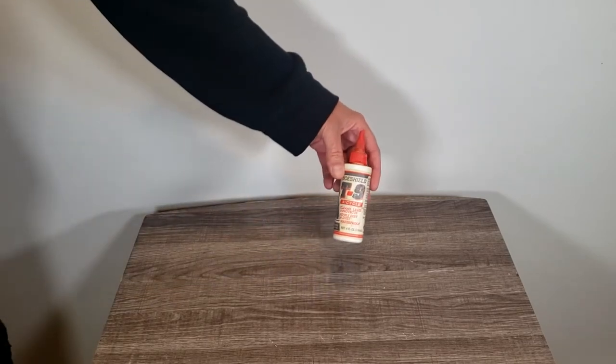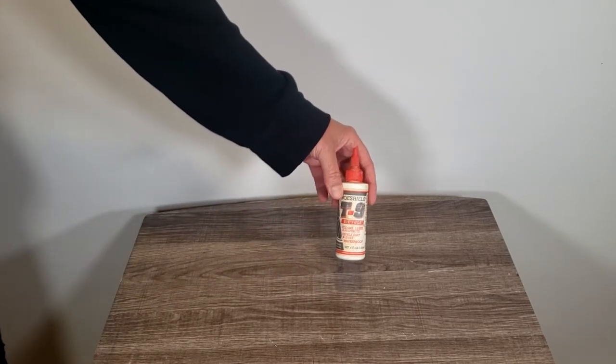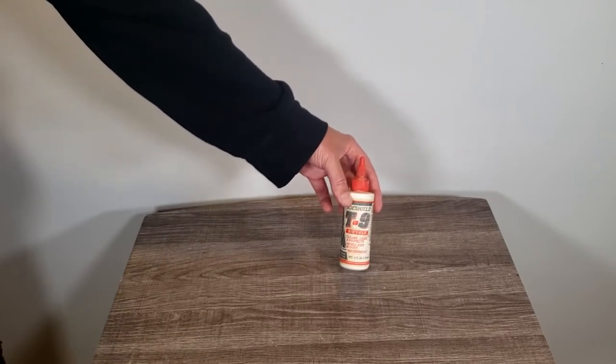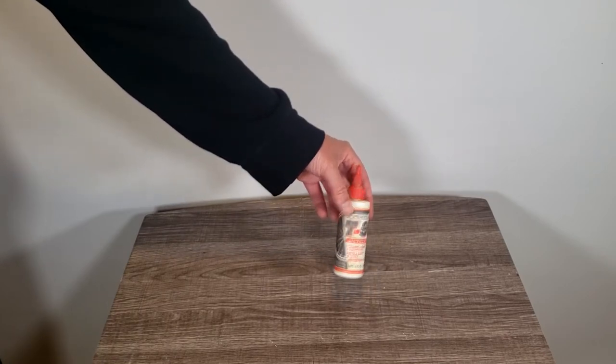I got this T9 chain lube three or four years ago. It's still got quite a bit left in the bottle. It's held up well through several seasons and it's waterproof if you're riding your bike in the rain.